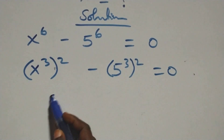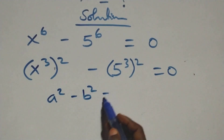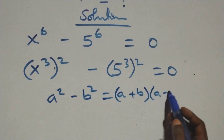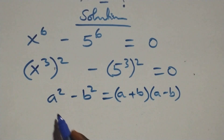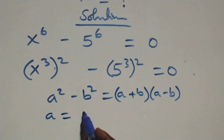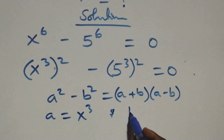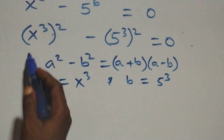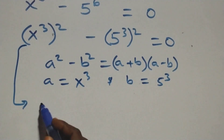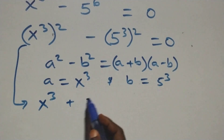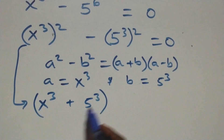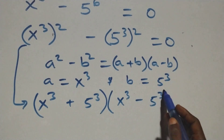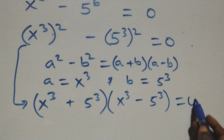This can be written using a squared minus b squared, which equals a plus b times a minus b, where a stands for x raised to the power 3 and b stands for 5 raised to the power 3. So it becomes x cubed plus 5 cubed, times x cubed minus 5 cubed, equals 0.